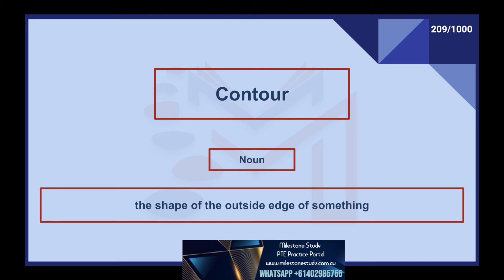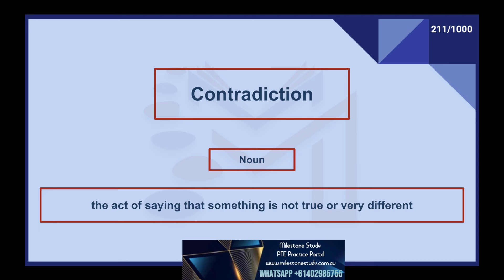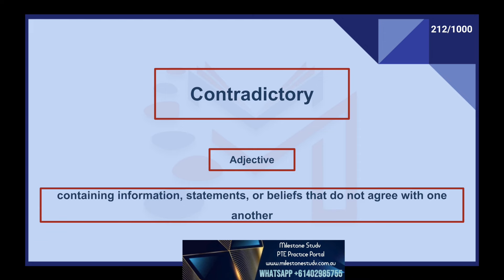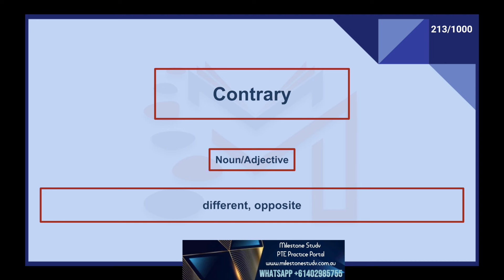Contour, noun: the shape of the outside edge of something. Contradict, verb: to disagree, to say the opposite is true. Contradiction, noun: the act of saying that something is not true or very different. Contradictory, adjective: containing information, statements, or beliefs that do not agree with one another. Contrary, adjective: different, opposite.